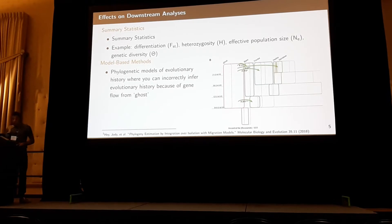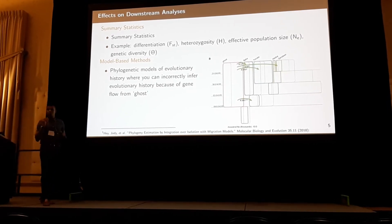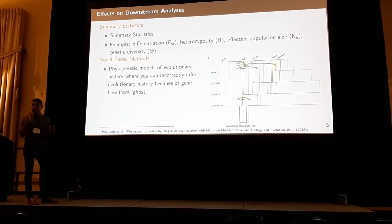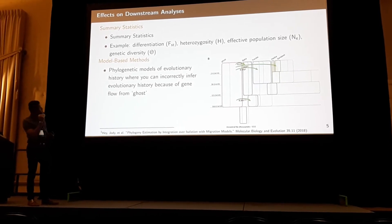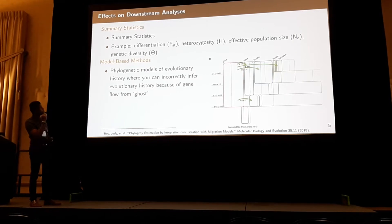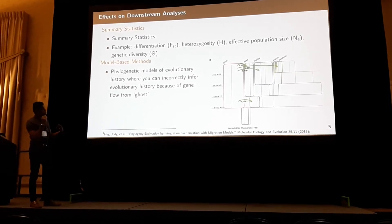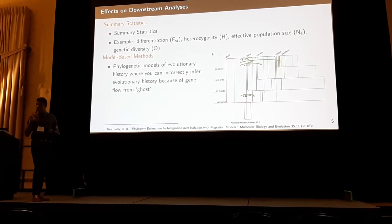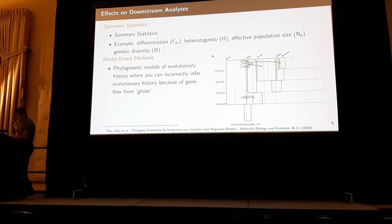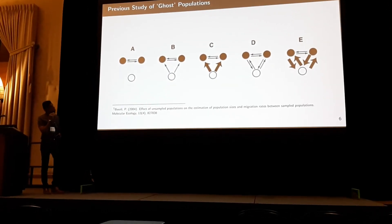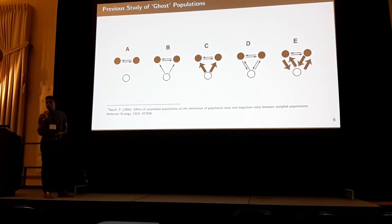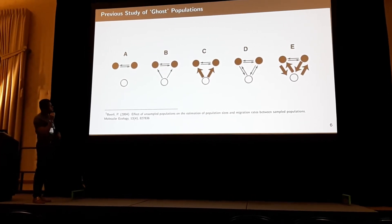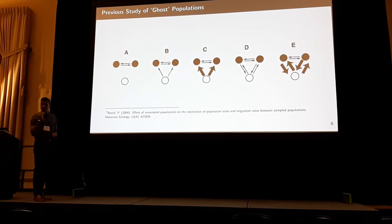Some studies have also suggested there have been maladaptive genes that have introgressed into human populations. But the bigger question is how much this actually affects what we estimate from sampled populations. We're interested in the general effect of unsampled variation on the estimation of summary statistics like MSD or heterozygosity, effective population sizes, and also what happens when you misspecify a model — the effect on estimation of evolutionary history. Peter Fairley did some work on this back in 2004, where he coined the term ghost populations, and Monty Slatkin followed with some theoretical work.